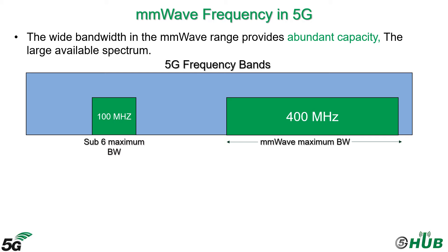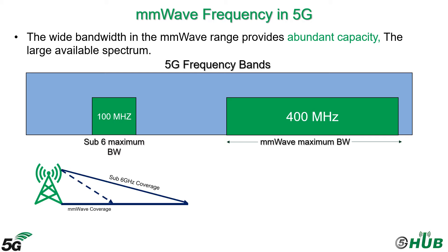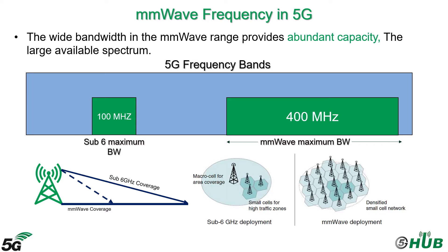However, operating in the mmWave spectrum comes with its own set of challenges, severe path and penetration losses being one of them. This leads to less coverage, and therefore more site deployments and a densified small cell network.